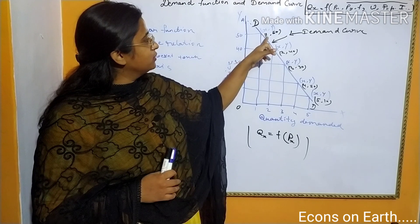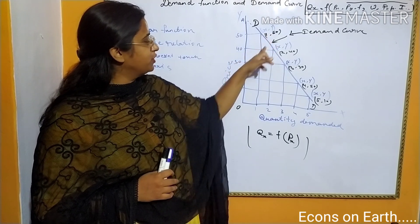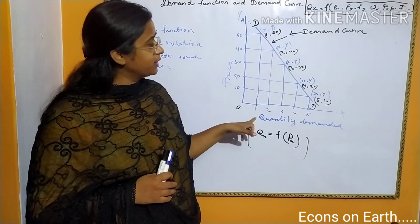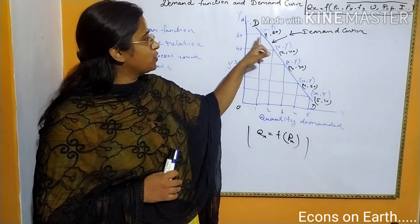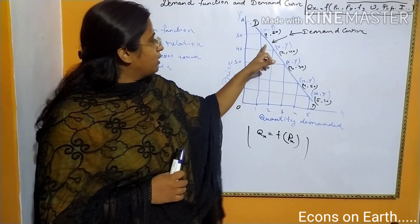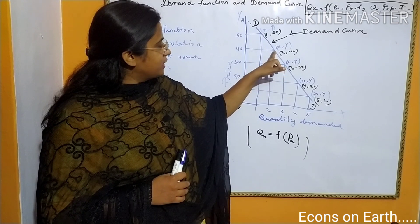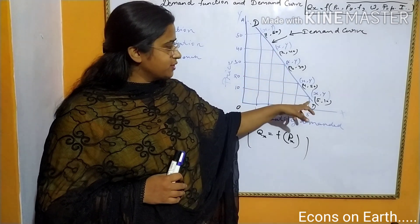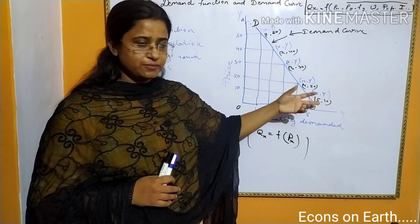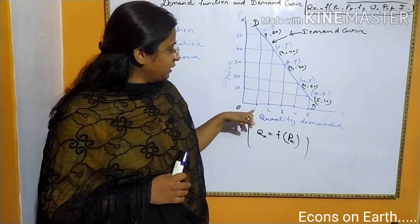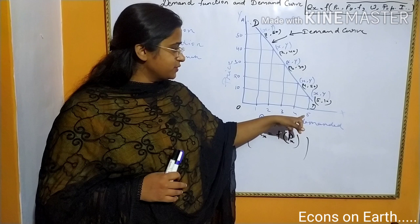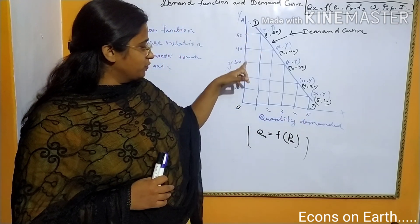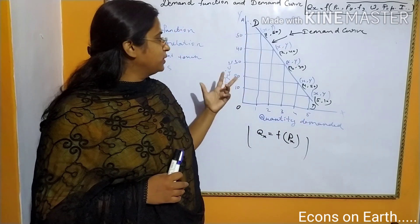We can understand this by the coordinates which we obtain here. Like at this point, the X coordinate we get is 1 unit of X and 50 units of price or money. Likewise, at different points we get different coordinates of X and Y. As the number of units increases, we will see that the amount of price per unit will decrease.